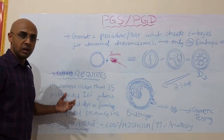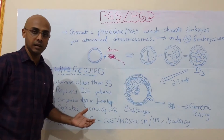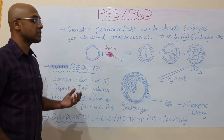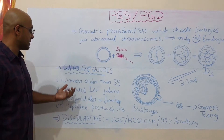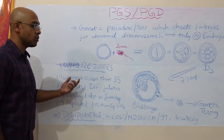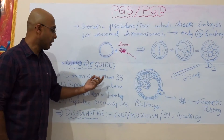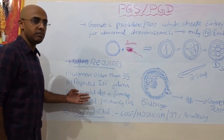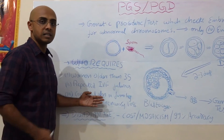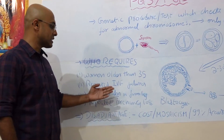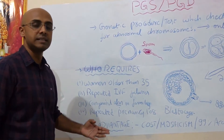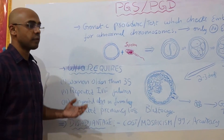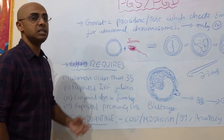Who requires PGS? We cannot do this procedure for everybody — only specific patients. Women older than 35 who have a high risk of having an abnormal baby, patients with repeated IVF failures, couples with congenital or genetic abnormalities running in their families, or those with repeated pregnancy losses — 3 or 4 losses — require PGS or PGD.